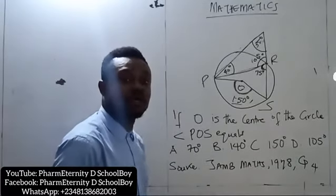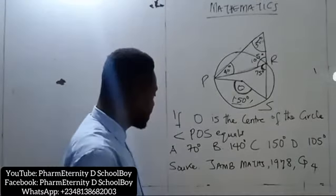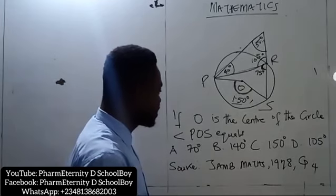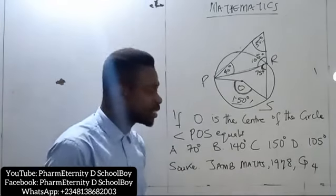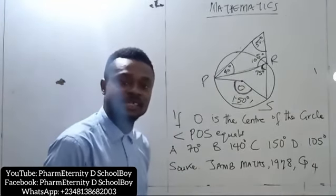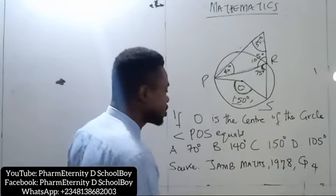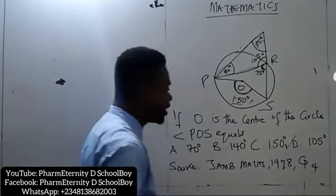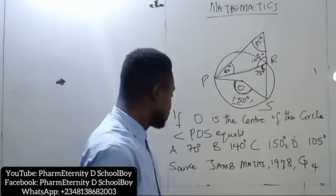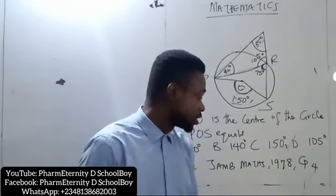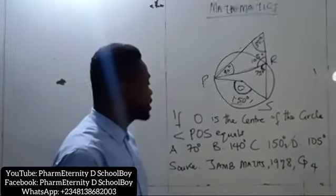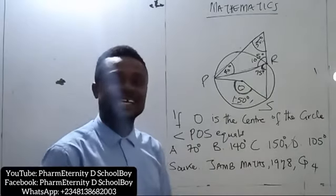So let's look at the option. Option A, 70 degrees. B, 140 degrees. C, 150 degrees. And D, 105 degrees. So the most appropriate option is option C, 150 degrees. So the answer to Jam Mathematics 1978 question 4 is 150 degrees C.